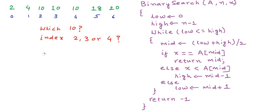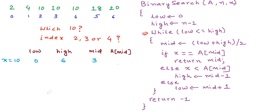Let us see a simulation of this algorithm for our example. I'll draw three columns: low, high, and mid. The number to be searched is x = 10, and the size of the array is 7. Initially low is 0 and high is 6. We calculate mid as low plus high divided by 2, so mid is 3. A[3] is 10 — x equals A[mid] — so we return 3 immediately. We return 3 and the search is over because we found 10 in the array.